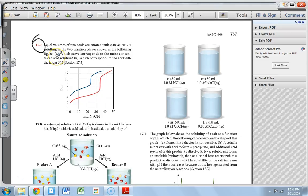Okay, so part A here it says which curve corresponds to the more concentrated solution? Well remember the relationship between concentration and pH, pH equals the negative log of the concentration of the hydronium ion.